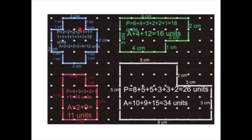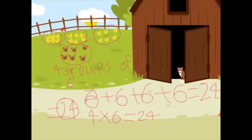Today we're going to talk about area and perimeter. There are four groups of six, and these are some ways to figure out the answer. There are four groups of six written out.